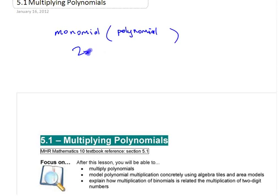Something like 2x times x plus 3, or even 3x times x squared plus x minus 2. That's the limit of what you did, and you looked at it several ways, and we looked at modeling with algebra tiles last time.